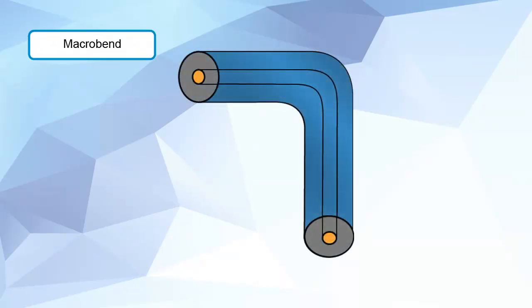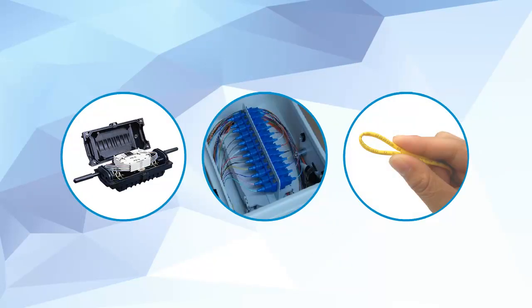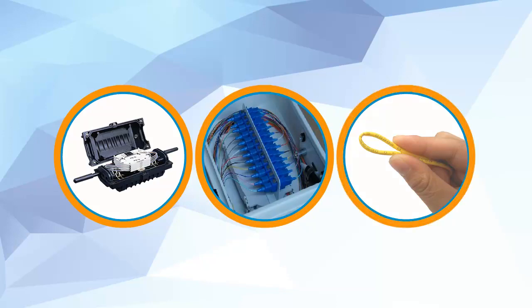A macro-bend is a bend or loop in the fiber with a radius of curvature of several millimeters or more, and this effect is to cause power to be lost from the core and thereby induce additional loss. Macro-bends are encountered in splice cases, termination cabinets, or any other point where the fiber encounters sharp bends or turns.